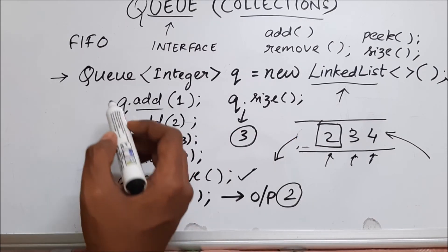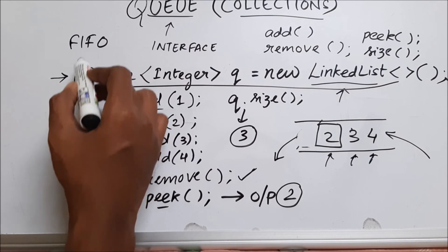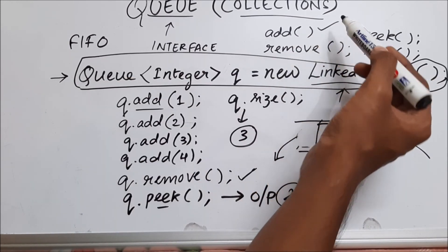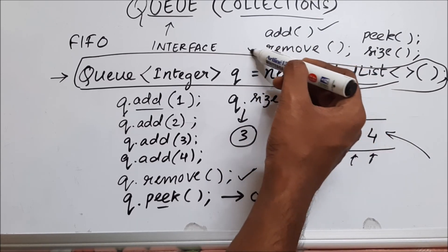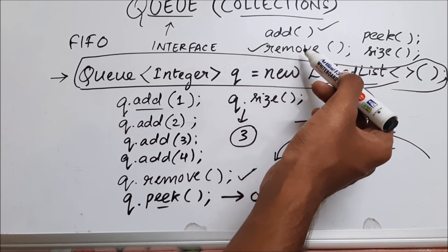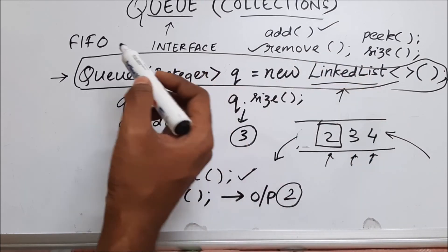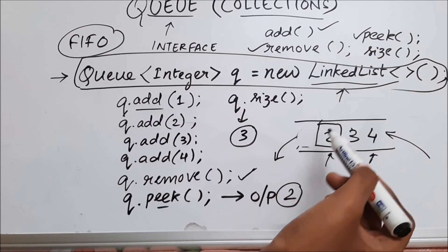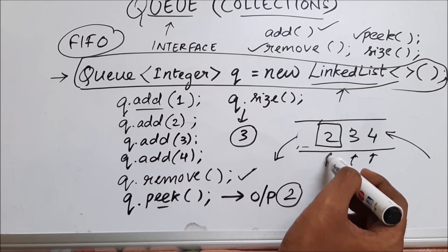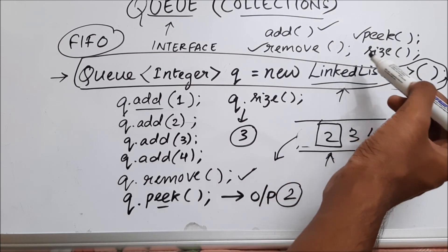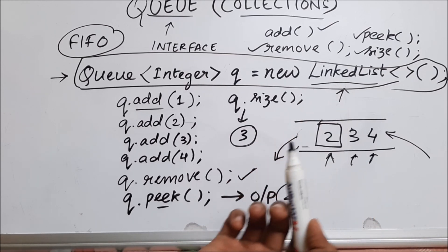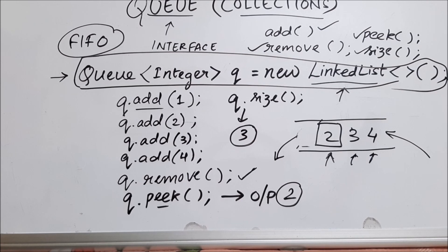Quick recap: we saw how to declare a queue, then we saw a few methods. We saw add to add values inside the queue, then remove which removes the first element because queue follows first in first out. Then we saw peek, which looks at the first element and gives it as output. Then we saw size, which gives the actual size of the queue. That's all for this video. If you learned something, please leave a like and consider subscribing to my channel. Thank you.